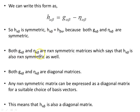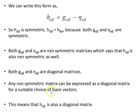Both G_αβ and eta_αβ are n-by-n symmetric matrices, so H_αβ is also an n-by-n symmetric matrix. And since both G_αβ and eta_αβ are diagonal matrices, and any n-by-n symmetric matrix can be expressed as a diagonal matrix for a suitable choice of basis vectors, H_αβ is also a diagonal matrix.